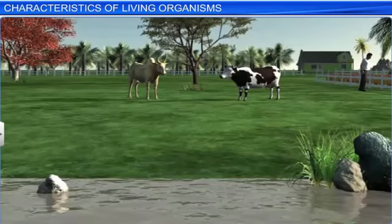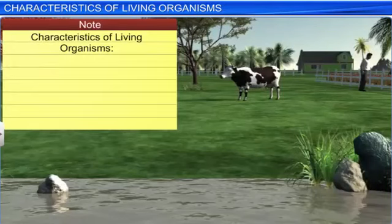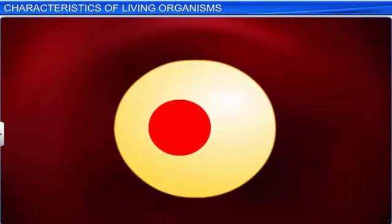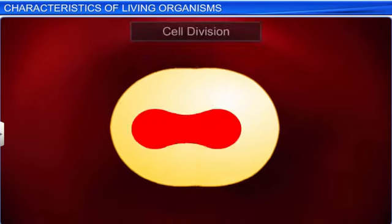However, these characteristics can be definitive or non-definitive. One such characteristic is growth. Living organisms, whether multicellular or unicellular, grow due to cell division.